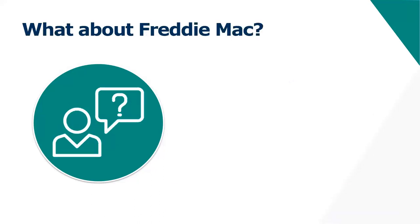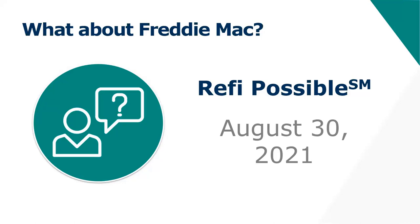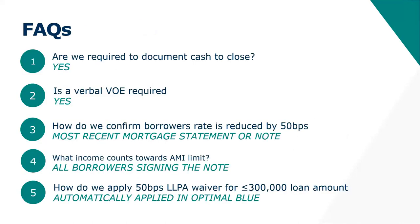Everything so far has been about Fannie Mae. What if your borrower's loan is owned by Freddie Mac? Freddie Mac is rolling out the exact same product — theirs is called Refi Possible — but it won't be available until August 30th of this year. If you check and find the loan is owned by Freddie, you'll be able to use that product, but not until August 30th. Finance of America will be launching Refi Possible on August 30th so we'll be ready to go when Freddie is.